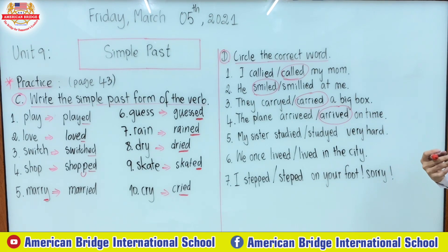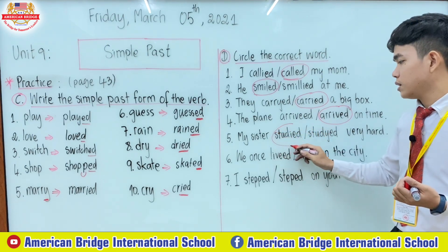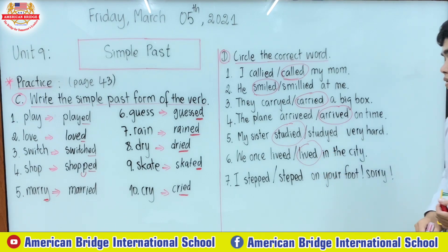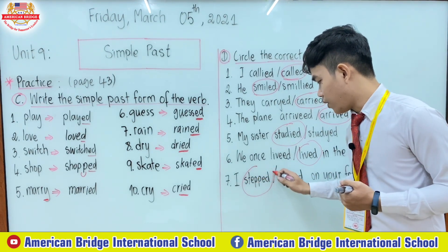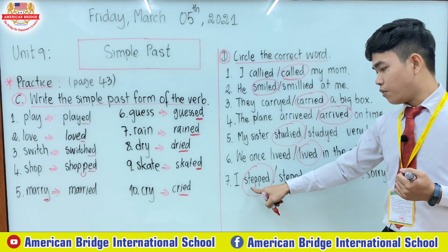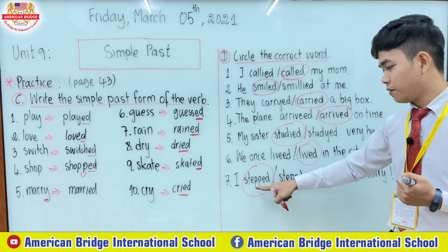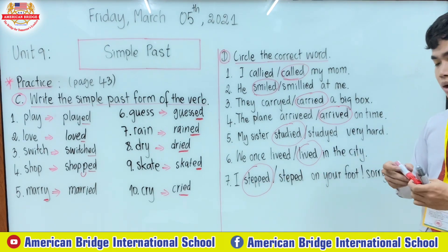Number five: 'My sister studied very hard.' The correct one is 'studied'. Number six: 'We once lived in the city.' The second one is correct: 'lived'. Number seven: 'I stepped on your foot.' The first one is correct because it's spelled with vowel e and consonant p — we have to double that consonant p: s-t-e-p-p-e-d.